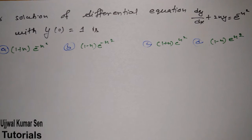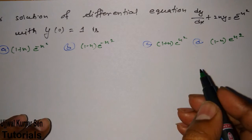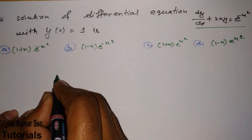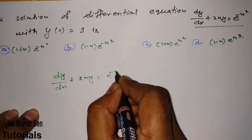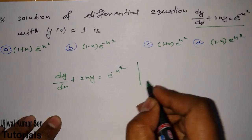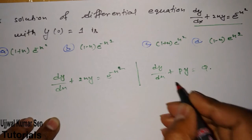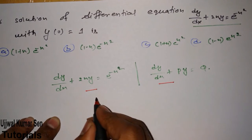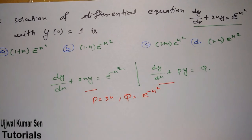If you want to study theoretical things, you can study from anywhere. But to understand numericals, you need visualization — otherwise it's really difficult, especially if you are a beginner. The equation given in this differential equation is dy/dx + 2xy = e to the power minus x squared. Compare with standard form: P = 2x and Q = e to the power minus x squared.